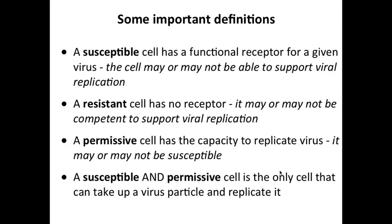Before we continue, it's important to define some terms that will come back over and over again in this course. They are not obvious in their meaning, so you'll simply have to memorize them. There are just two: susceptible and permissive. These refer to cells and their ability to be infected by viruses. A susceptible cell has a functional receptor for a virus — that's all susceptible means. Nothing is implied about what happens beyond the receptor; the cell may or may not be able to support viral replication. Susceptibility only refers to whether or not there's a receptor on the cell surface. If a cell is resistant to virus replication, that's because it has no receptor, though it may be able to support replication internally.